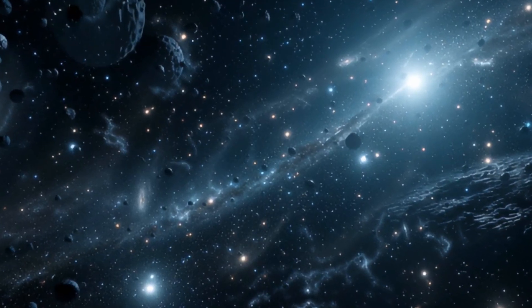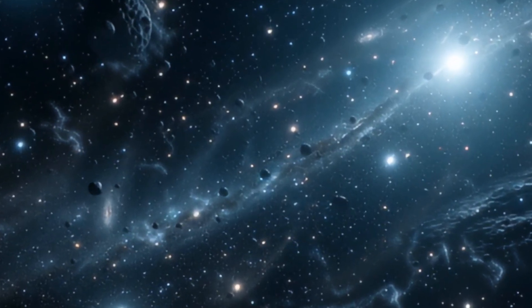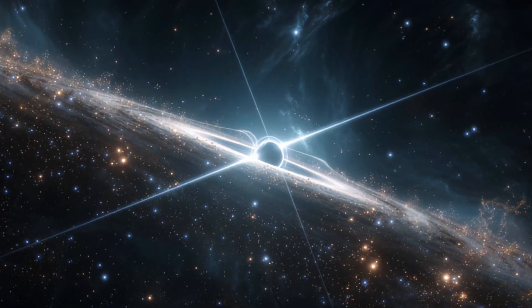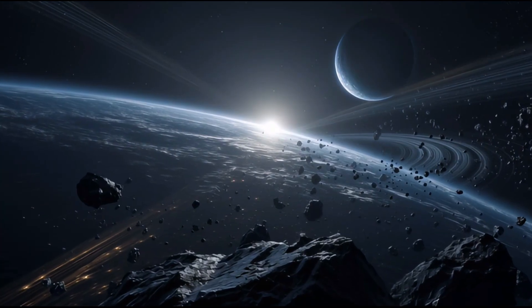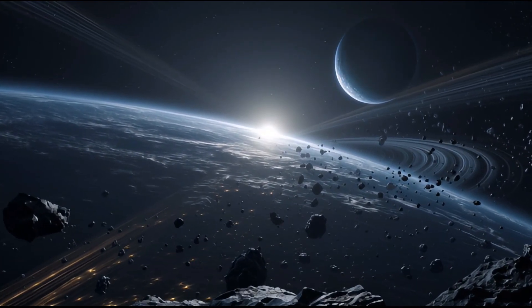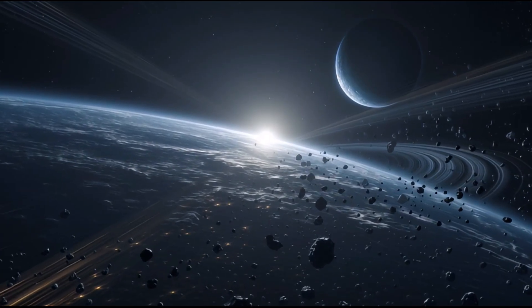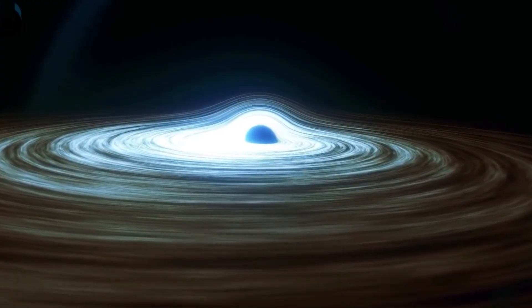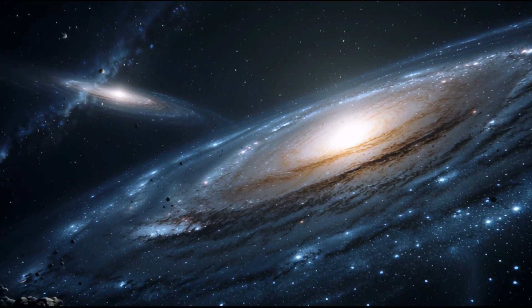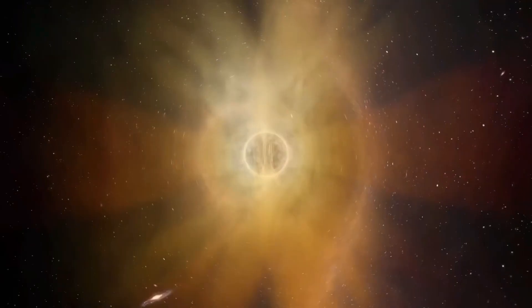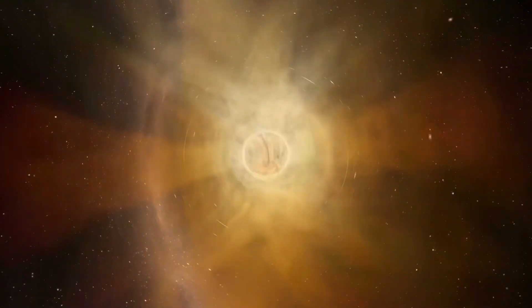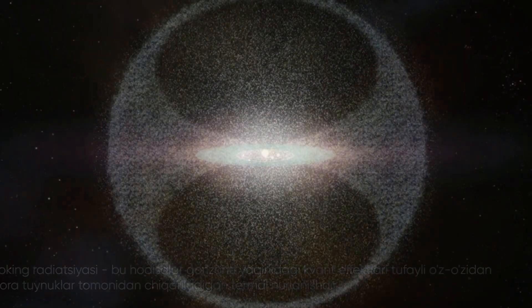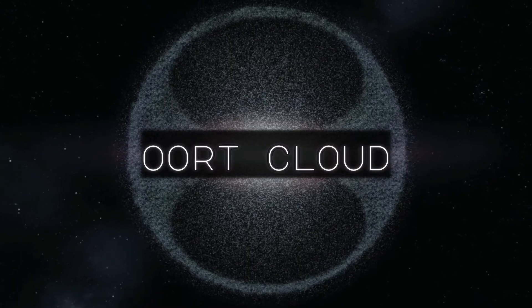The genuinely terrifying scenario? A stellar mass black hole passing through the outer solar system. It wouldn't need to come close enough to directly threaten Earth. Even passing within a few thousand astronomical units could gravitationally perturb the Oort cloud, potentially sending a barrage of comets into the inner solar system over millions of years. It's a cosmic hazard we literally cannot see coming with current technology. The good news is space is vast, and such encounters are statistically unlikely. The unsettling news is that unlikely isn't impossible, and we've already found evidence of stars that have passed through the Oort cloud in the past.